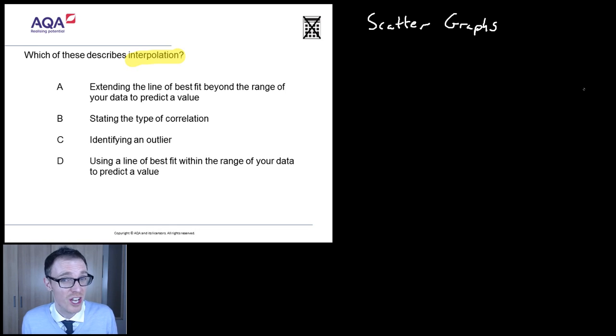So, I thought this was a good question to choose because students are getting this wrong. Let's have a look at it. Which of these describes interpolation? What does interpolation mean? Well, interpolation is a posh name for something. It's a posh name for prediction.